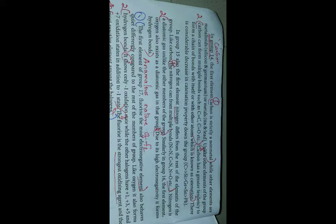Second point, carbon they can form multiple bonds that is double bond as well as triple bonds. Third point, it having a greater tendency to form catenation. That means it can form a chain of bonds with itself or with other atoms which is known as catenation. So these three properties only.